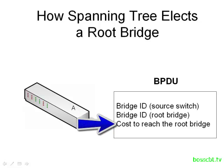The third bit of interesting information in the BPDU is the cost to reach the root bridge. So if switch A says it believes switch B is the root bridge, not only will it give you switch B's Bridge ID, but it will also tell you its path cost in order to get there. That will help any other switch determine their own path cost. There are a few more fields in the BPDU, but these are the most interesting ones as they pertain to electing a root bridge in Spanning Tree.